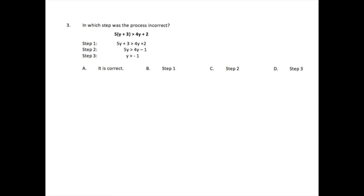In this problem, what you are being asked to do is, in which step was the process incorrect? So here we have an inequality. So we start with parentheses, just like in all of the operations, distributing our 5. So 5 times y, 5y. 5 times 3, 15.